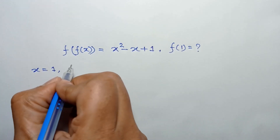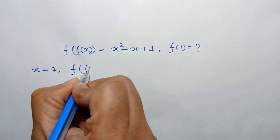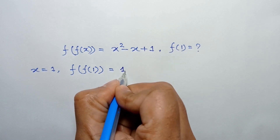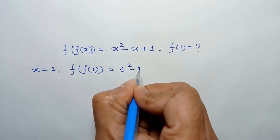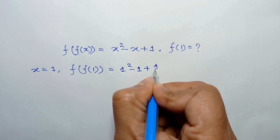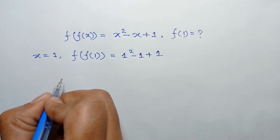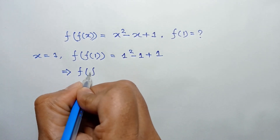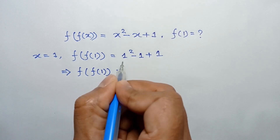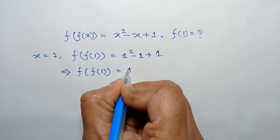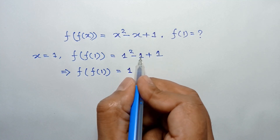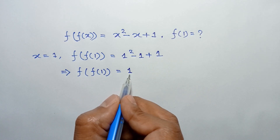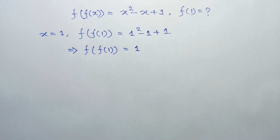Now if we put x equal to one in this function, we will have f(f(1)) equal to one squared minus one plus one. One squared is one, and the negative one and positive one cancel out, so the value of f(f(1)) is one.